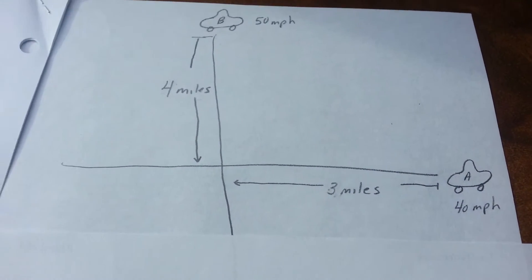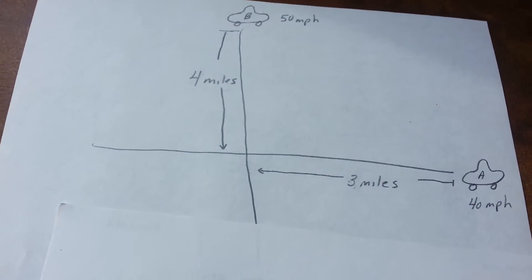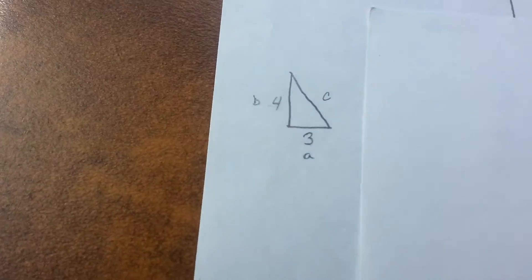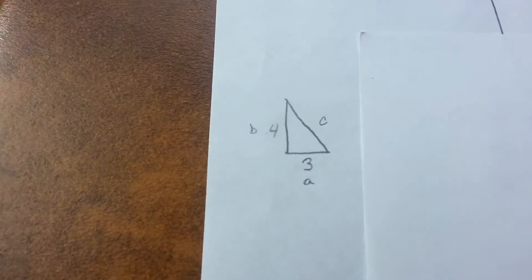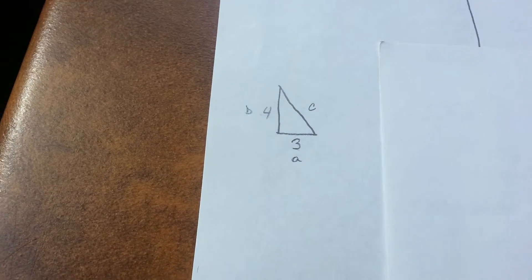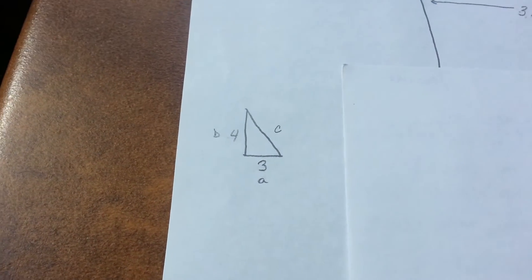3 and 4 miles. We can also write this as a triangle as in 3, 4 and we have to find the distance between which would be C. So we would have A, B and C.